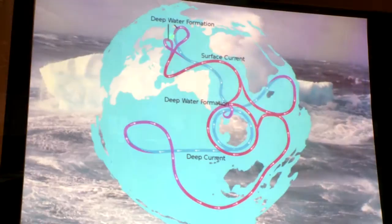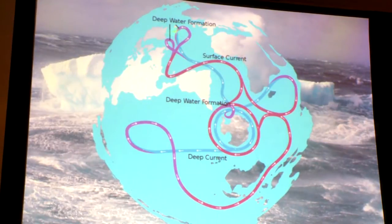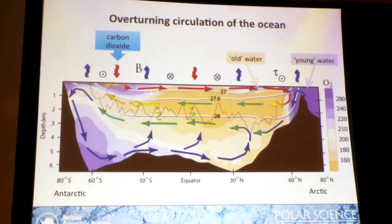I was talking today about how to use mathematical techniques to better understand key processes in the ocean. The particular thing we're interested in understanding is the amount of mixing in the ocean. This is important because the ocean circulation works by deep ocean circulation coming up to the surface, where it's able to exchange heat and carbon dioxide with the atmosphere.